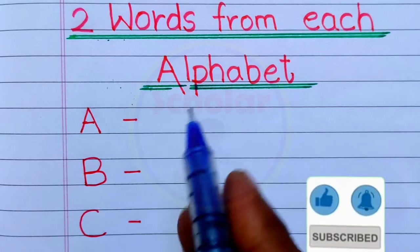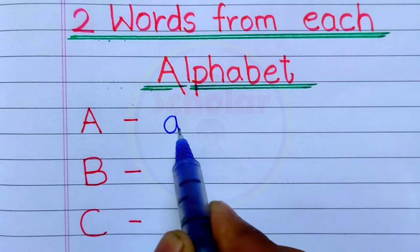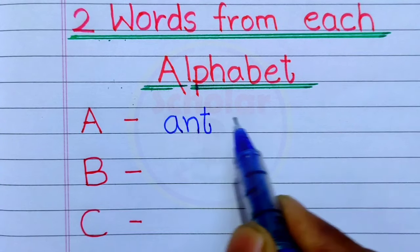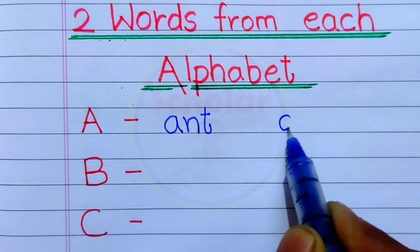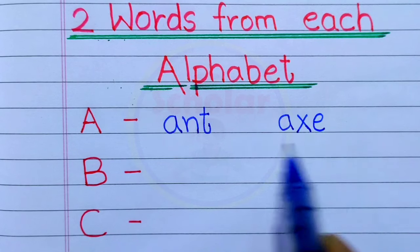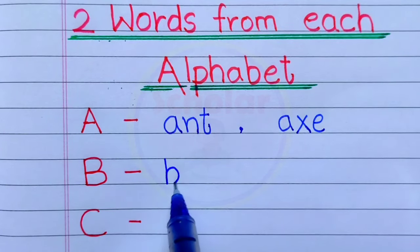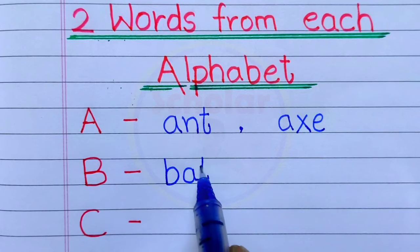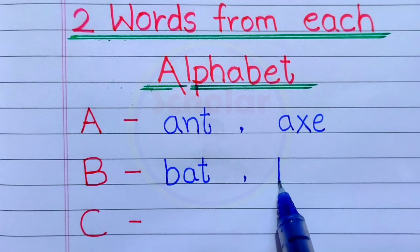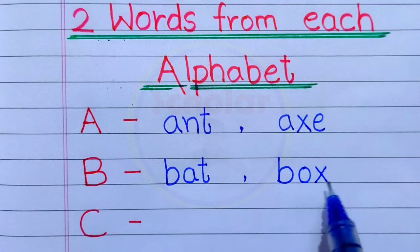Today we learn two words from each alphabet. A - Ant, Axe. B - Bat, Box.